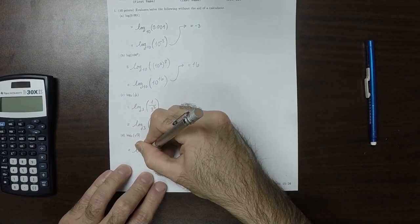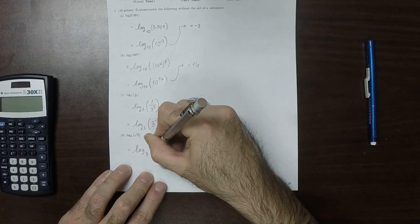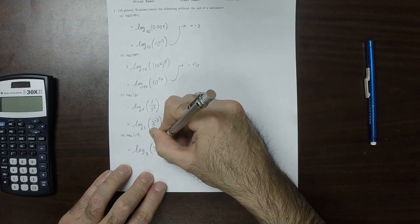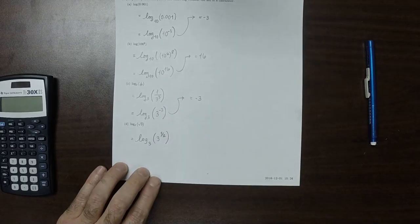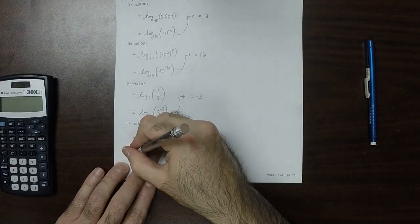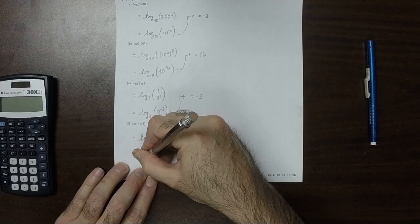Finally, this is log base 3 of 3 to the 1 half, because that's what square root means. And so this is just 1 half.